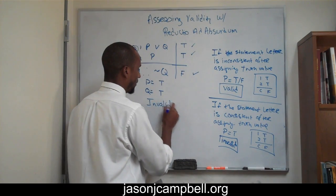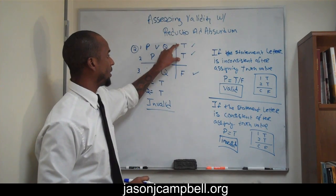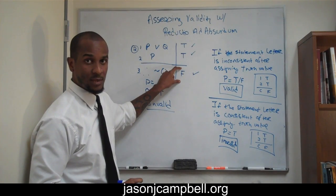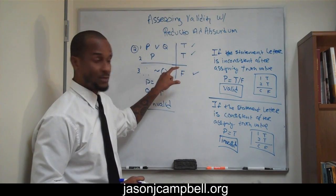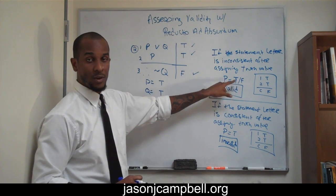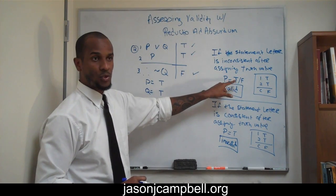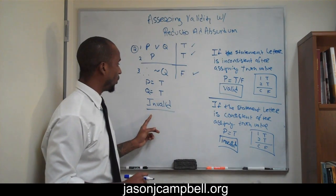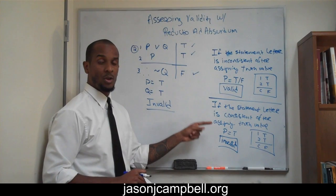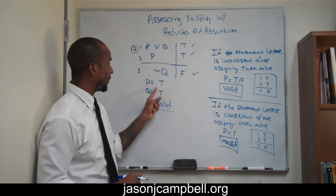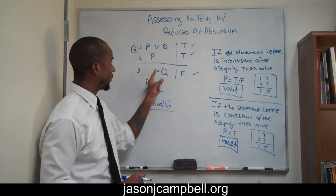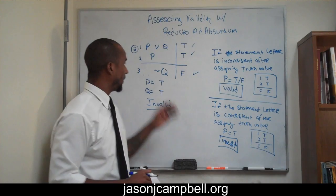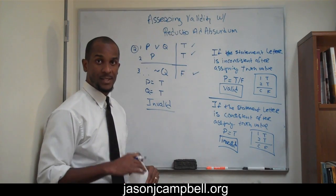An argument cannot have true premises and a false conclusion. If an argument has true premises and a false conclusion, the argument is invalid. We know that this argument is invalid because we did not have to use or assign our truth functions inconsistently to the statement letter. What we did was we simply selected one truth function for one statement letter, and insofar as we input that truth function for the statement letter, we arrived at an inconsistent or an invalid argument. So we know that number two is invalid.